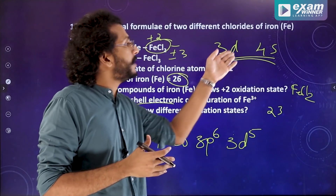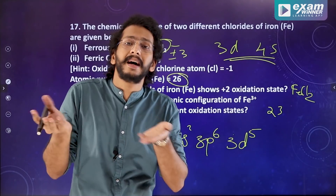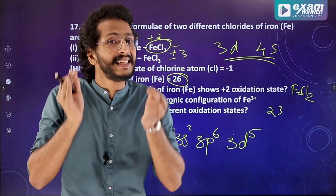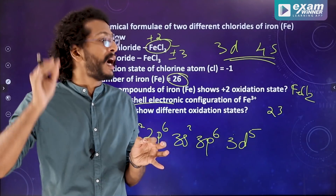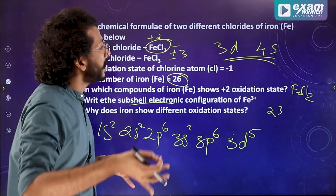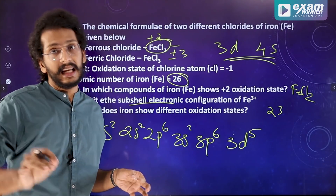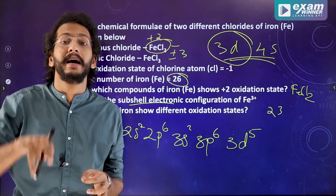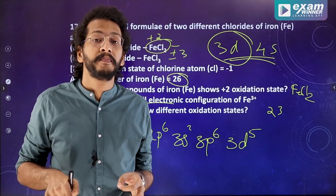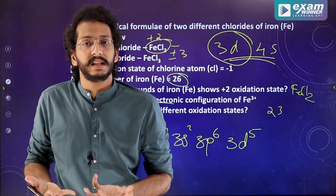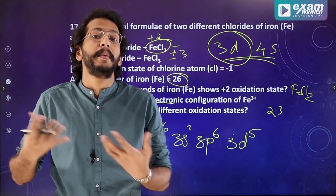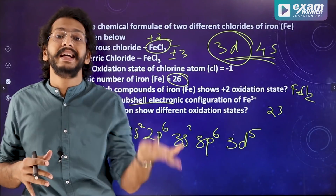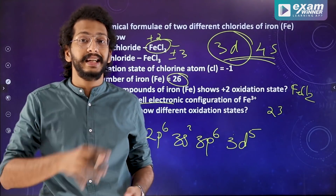The 3d and 4s orbitals are of comparable energy with the least energy difference. That is why electrons from these orbitals participate in bonding, and that is why iron shows a variable oxidation state.